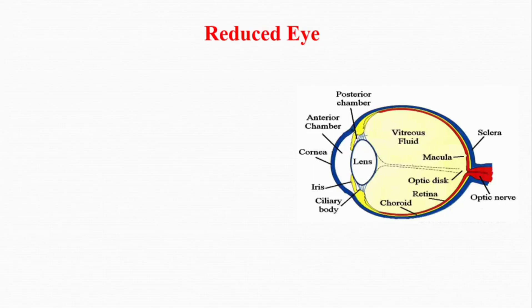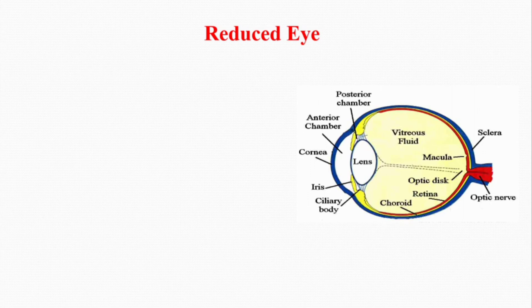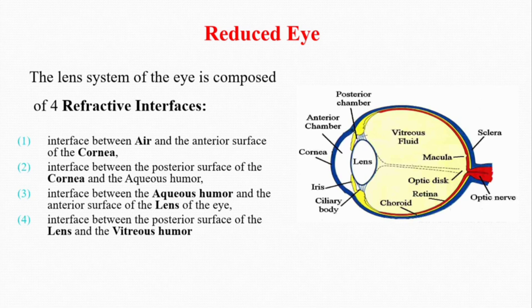A very important concept related to the physiology of the eye is called a reduced eye. When we think of our eye, we usually think there is only one refractive surface — our lens — and that this is the only surface which causes refraction of the light rays so they are focused on the retina. But actually, in our eye there are four refractive surfaces, or refractive interfaces. The first refractive surface is between the air and the anterior surface of the cornea.